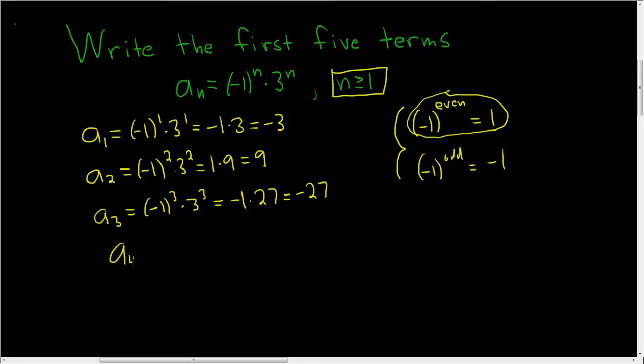A sub 4, this is negative 1 to the 4th power times 3 to the 4th power. Negative 1 to the 4th power is 1 because 4 is even. 3 to the 4th power is 81. So this is equal to 81.